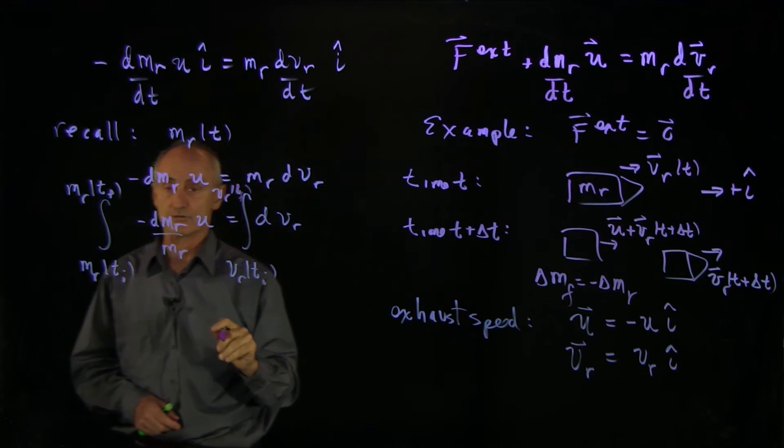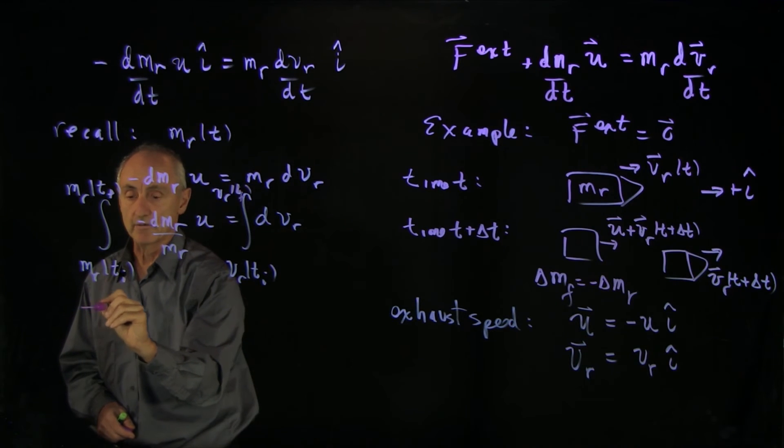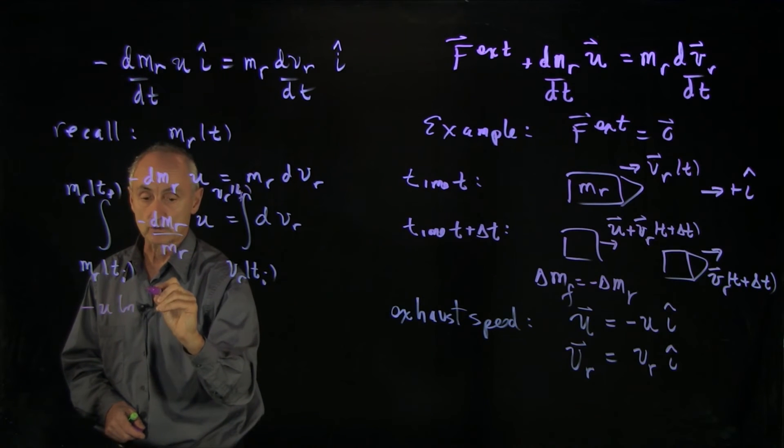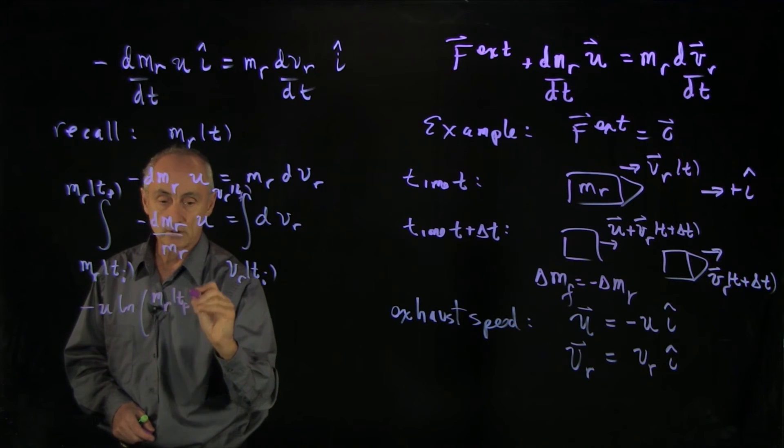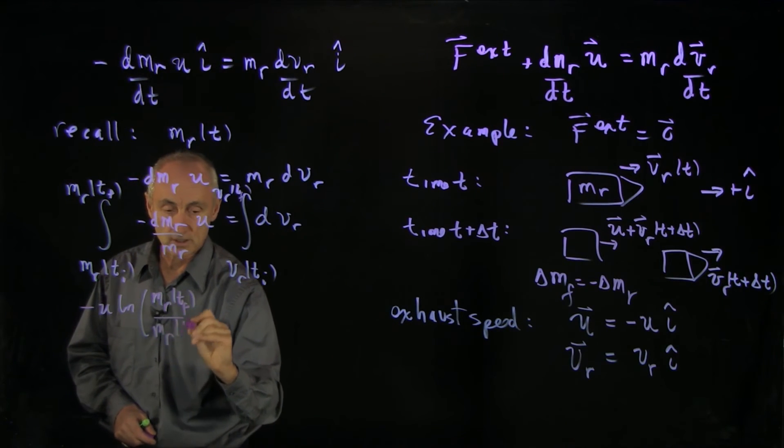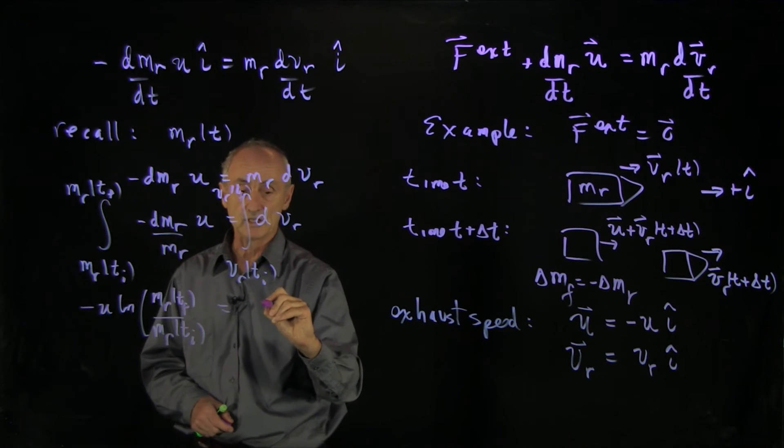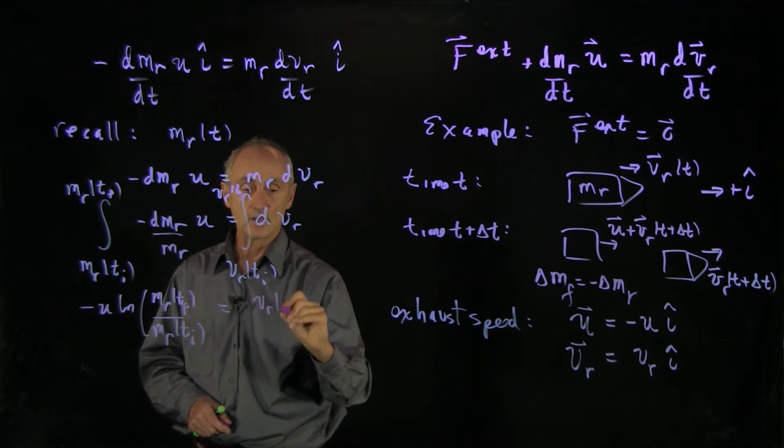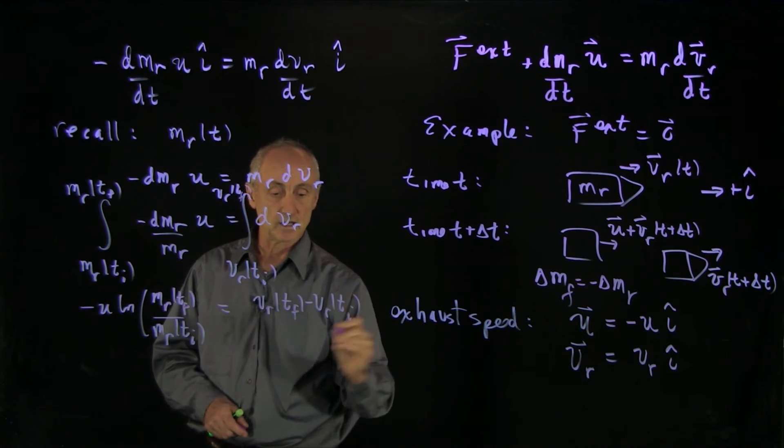And both these integrals are straightforward. On the left-hand side, we have a natural log. So we have minus u natural log of m_r(t_final) over m_r(t_initial). And this side, we just have the velocity difference, v_r at t_final minus v_r at t_initial.